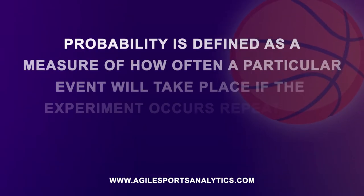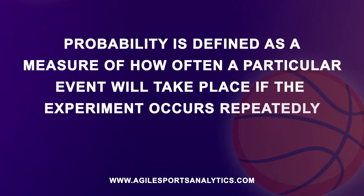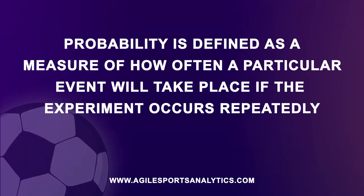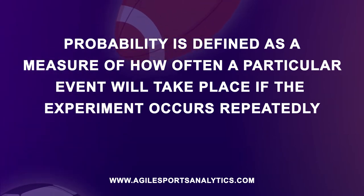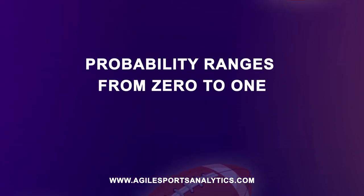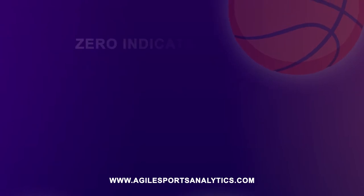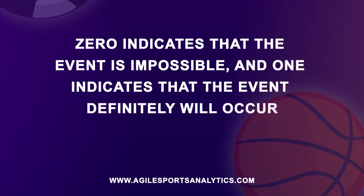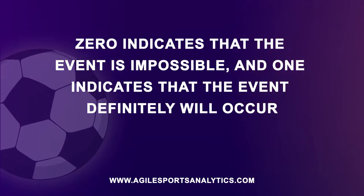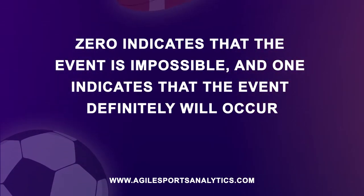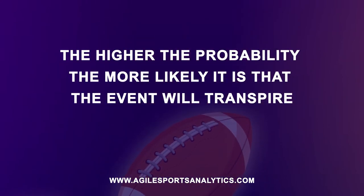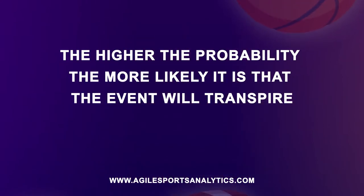Probability is defined as a measure of how often a particular event will take place if the experiment occurs repeatedly. Probability ranges from 0 to 1: 0 indicates that the event is impossible, and 1 indicates that the event definitely will occur. The higher the probability, the more likely it is that the event will transpire.